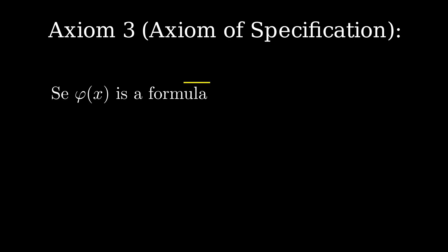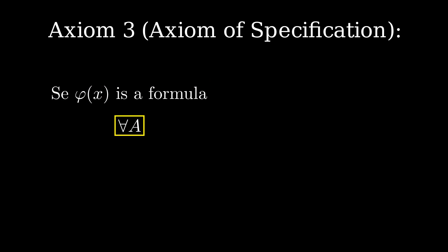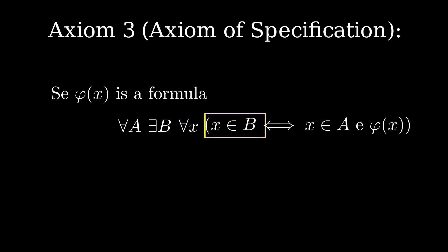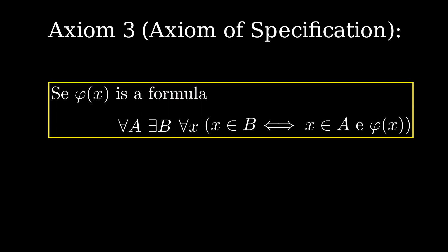Let's state axiom 3 formally — it is called the Axiom of Specification. If φ(x) is a formula that takes true or false values depending on x, then for every set A there exists a set B such that for every element x, x belongs to B if and only if x belongs to A and φ(x) is true. In other words, if A is a set, the container B whose elements are the elements of A that satisfy φ is actually a set. To be precise, this is a schema of axioms, not just a single axiom, because there is one axiom for every formula φ.